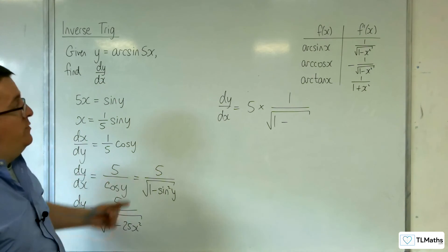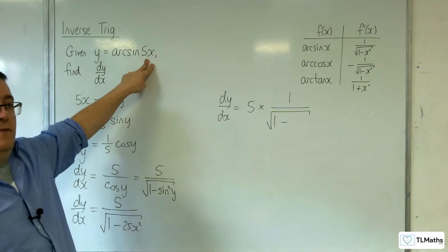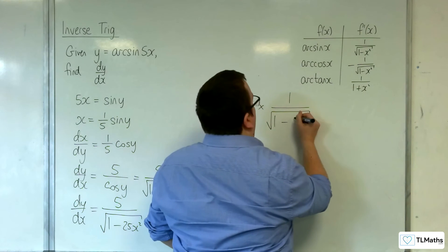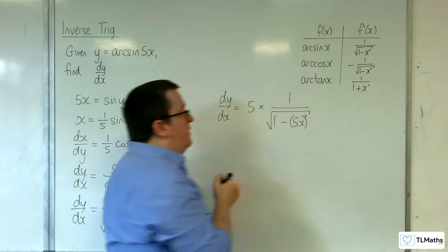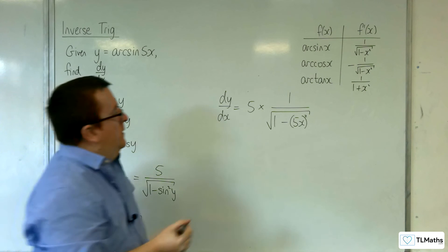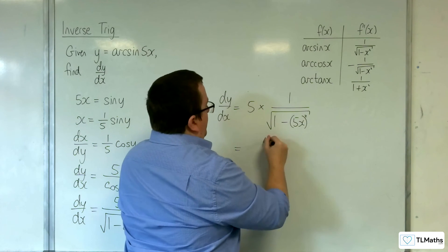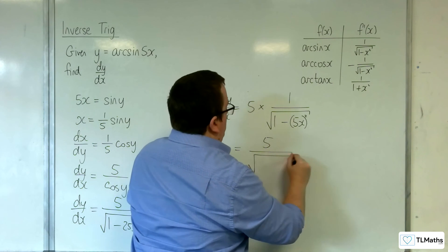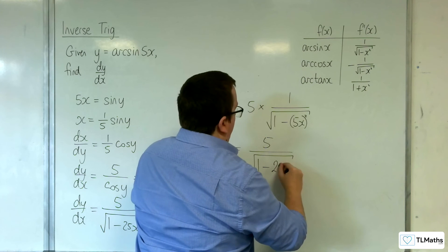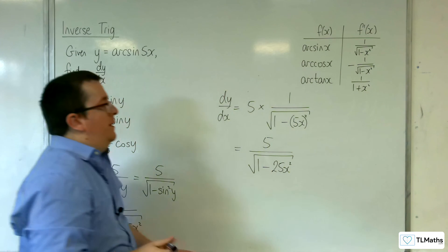The interior function is 5x. So that stays the same. And that gets put in there. And so we get 5 over the square root of 1 minus 25x squared.